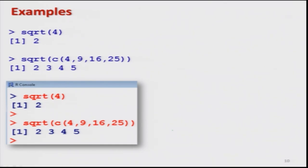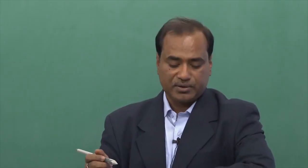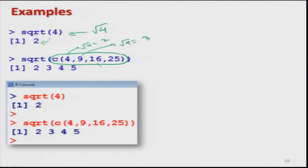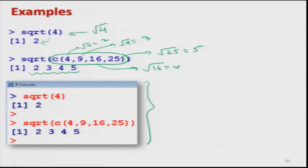For square root, the built-in function is sqrt. For example, sqrt(4) gives 2. If I want the square root of more than one value, all values must be combined inside a vector. Then the sqrt function is applied: sqrt(4) is 2, sqrt(9) is 3, sqrt(16) is 4, and sqrt(25) is 5. This is the answer obtained, and the screenshot of the same operation in R is shown.